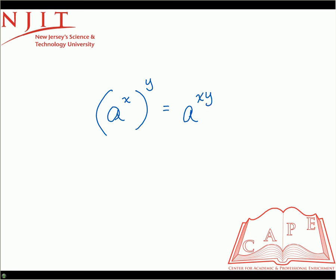And a numerical example would be if you had 5 to the 2nd raised to the 3rd. This is the same thing as simply 5 raised to the 2 times 3, which is 5 raised to the 6th.